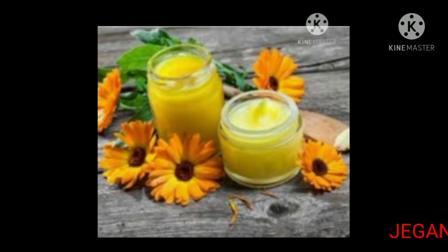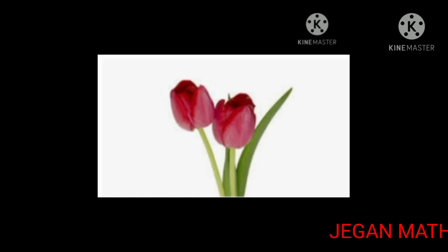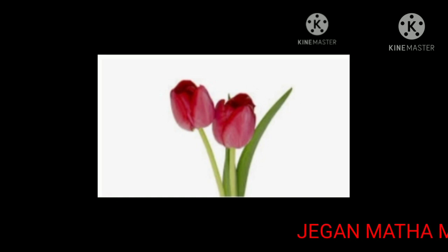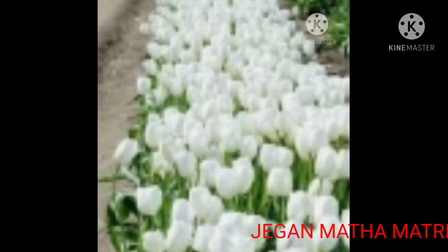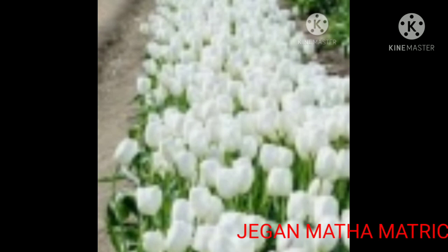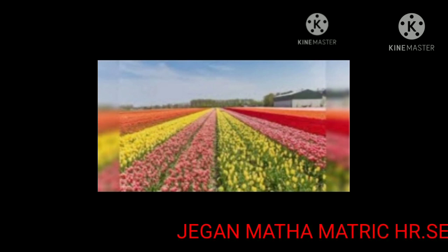Now shall we see the next one? Have you ever seen this flower? These are tulips. Tulips are some of the most popular spring flowers. They are generally red, pink, yellow, or white in color. A tulip can have one or more flowers on the stem. Tulips grow best in full sun.